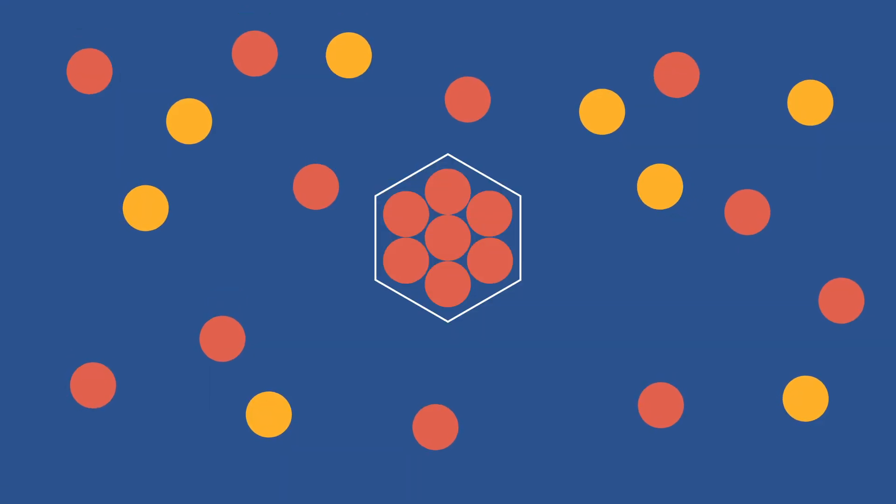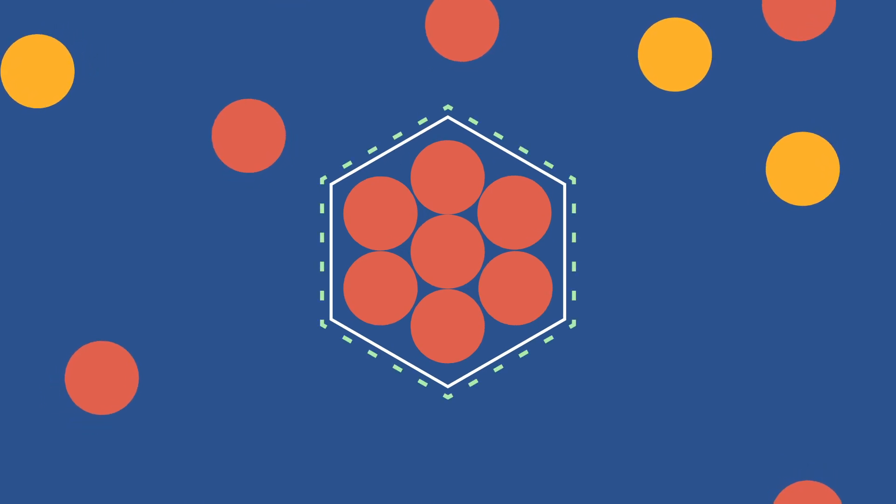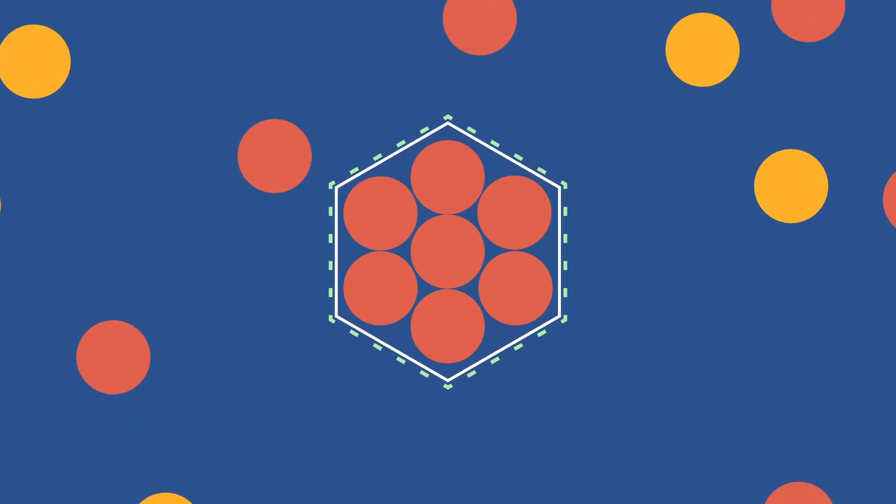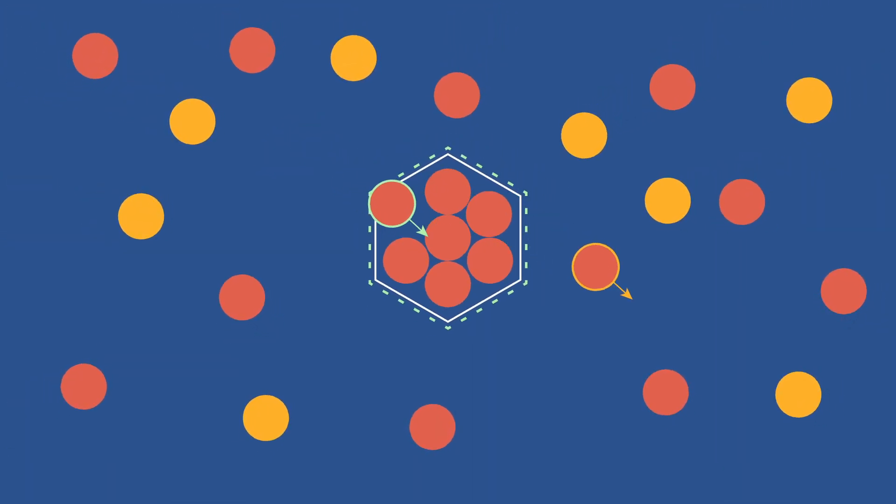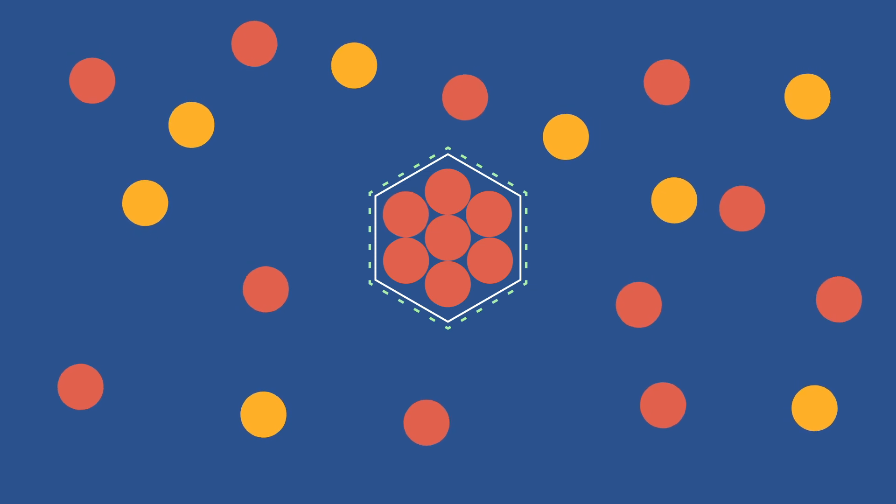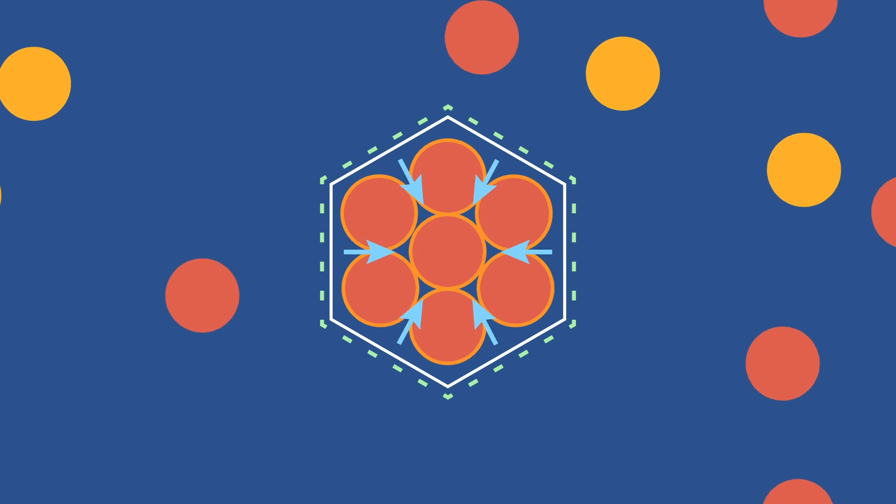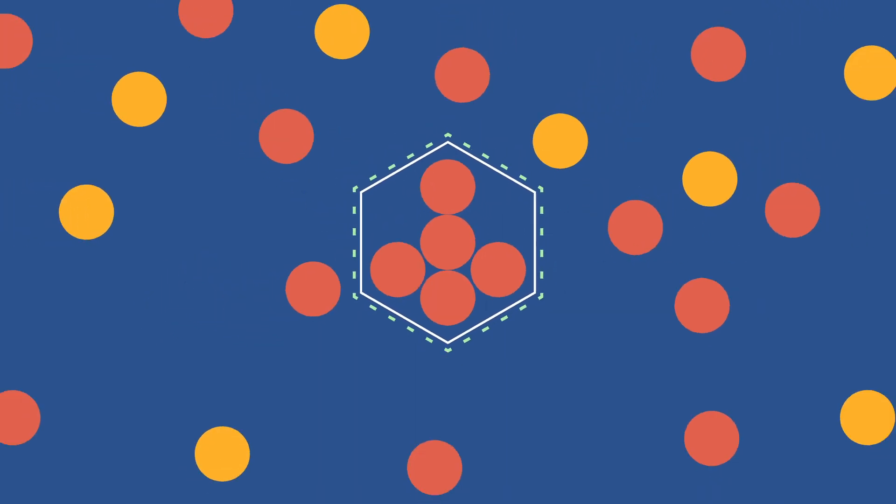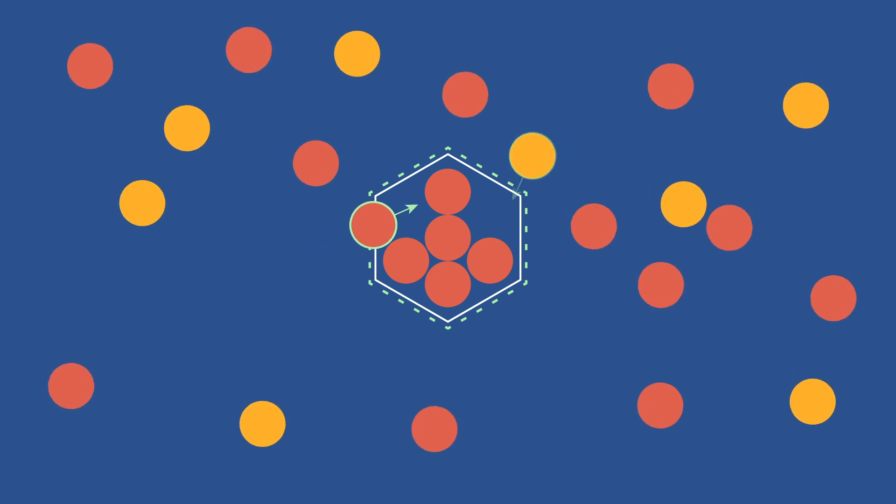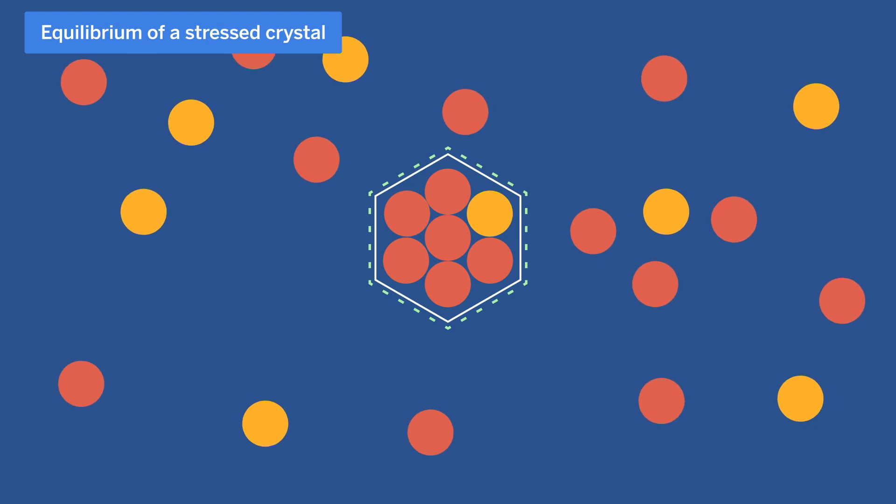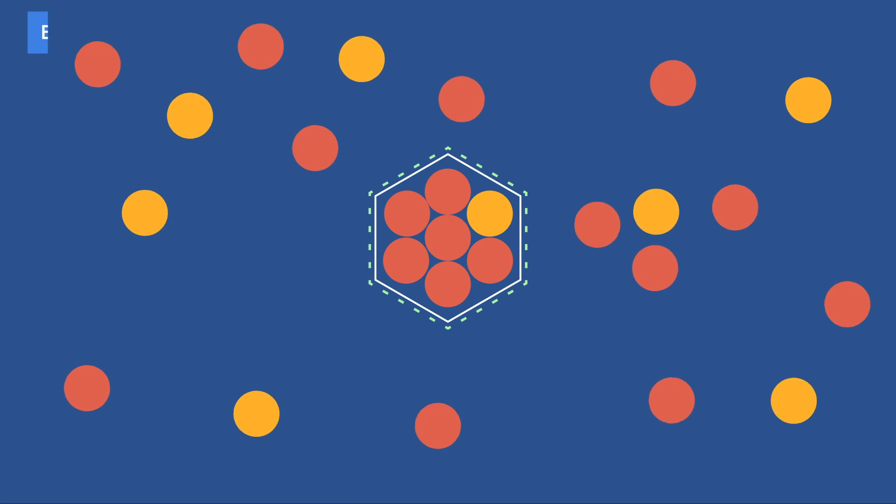Going back to our crystal in a supersaturated solution, let us imagine surrounding it with a semi-permeable membrane, allowing us to squeeze the crystal without preventing the exchange of ions or water between the crystal and the solution. By pressing on the crystal, its energy state increases, making escape more favourable. A new equilibrium is reached in which the crystal, under pressure, is in equilibrium with a higher concentration where the rates of capture and escape are again in balance.